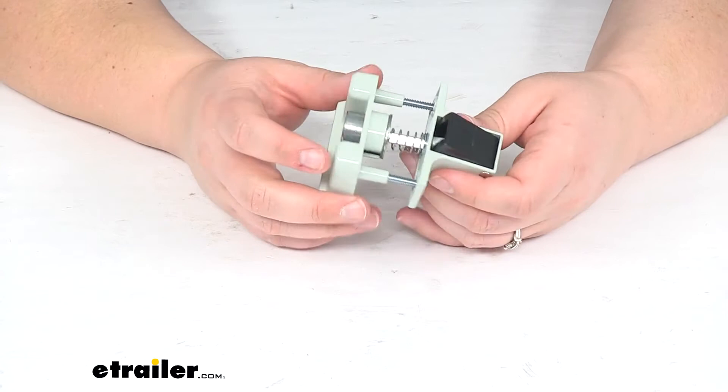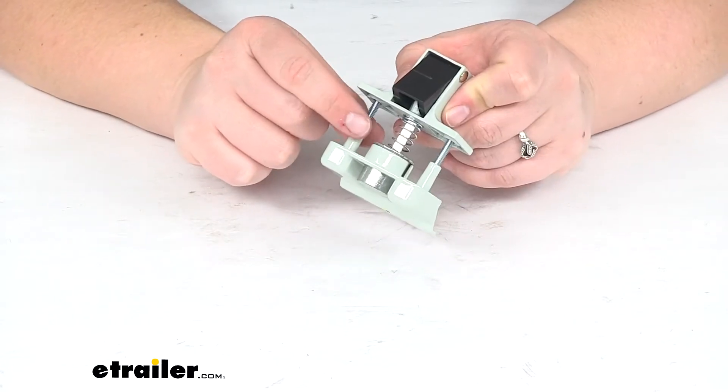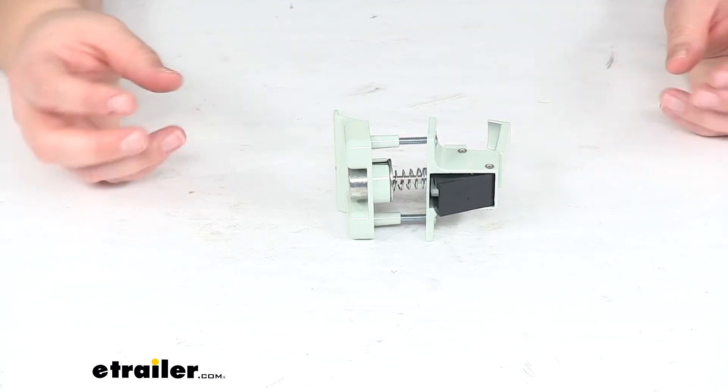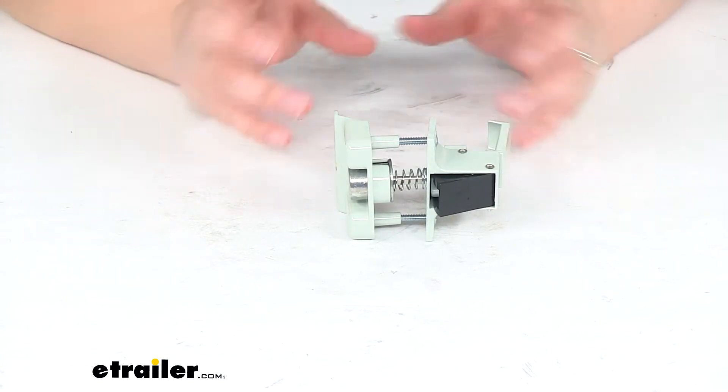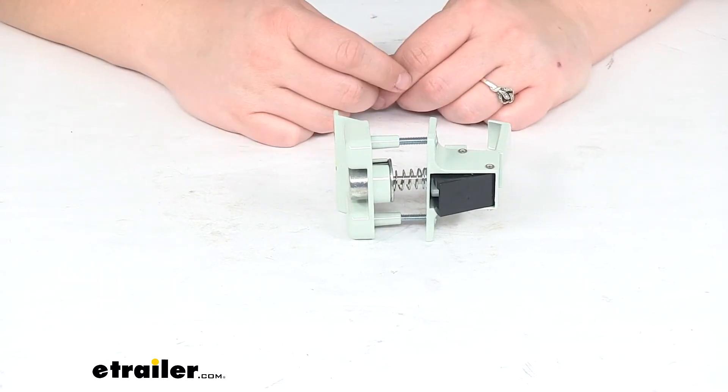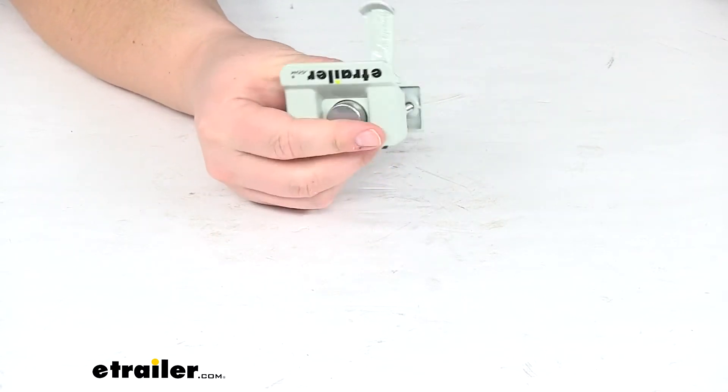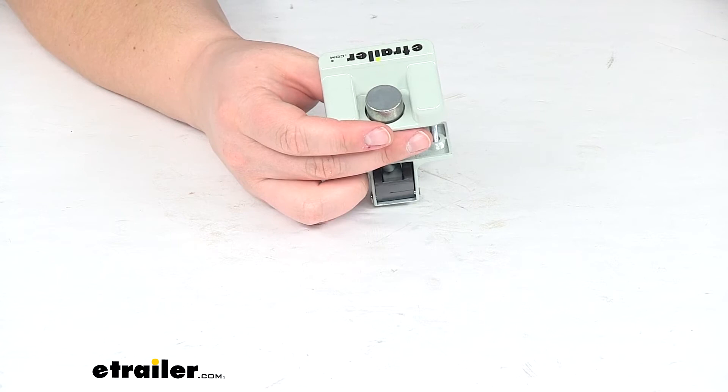Pretty easy to get put together. These little rods have a threaded hole in there so it should be pretty easy to just take out your old one, pop this new one in there, get all the components lined up, thread it in place and you're good to go. This is covered by a lifetime warranty from JR Products.